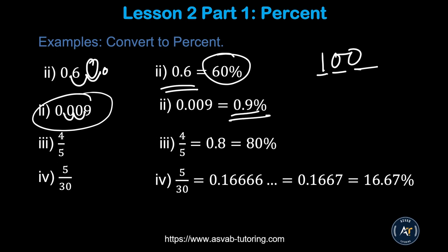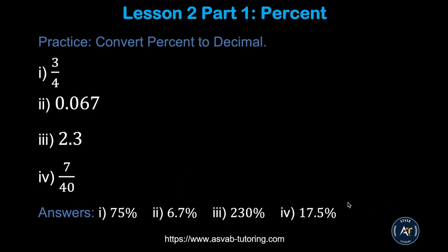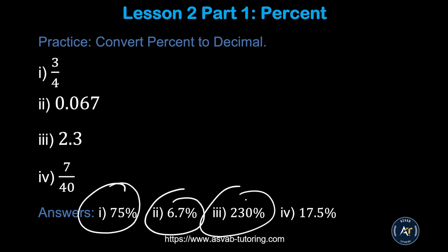Four over five as a decimal is 0.8; move two decimal places and you get 80 percent. Three over fifty is 0.1666... repeating — to convert that to a percent, move two decimal places to get 16.67 percent. Here are some practice problems — try them yourself and make sure you get the right answers.